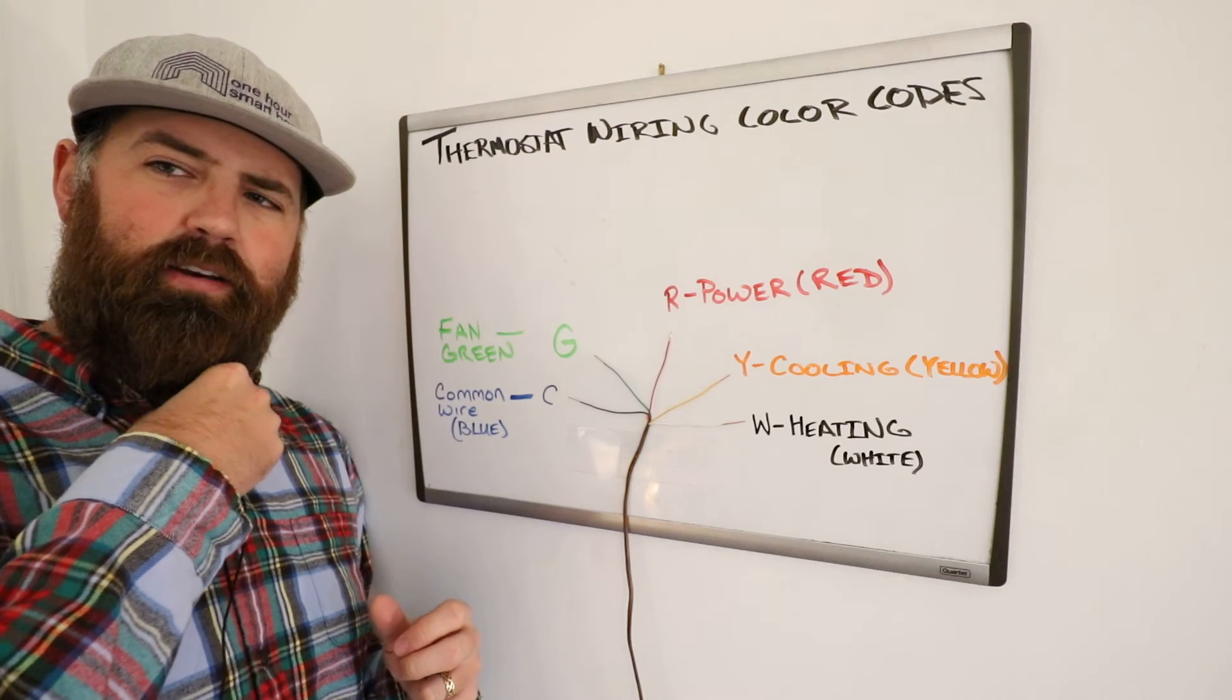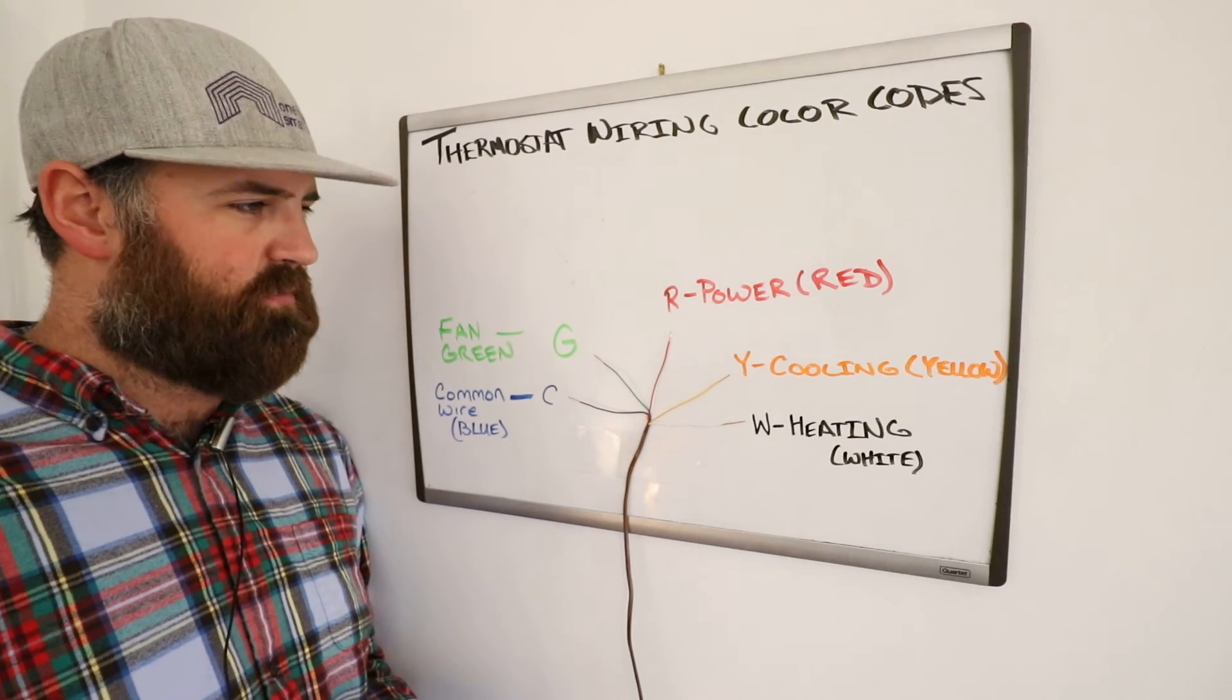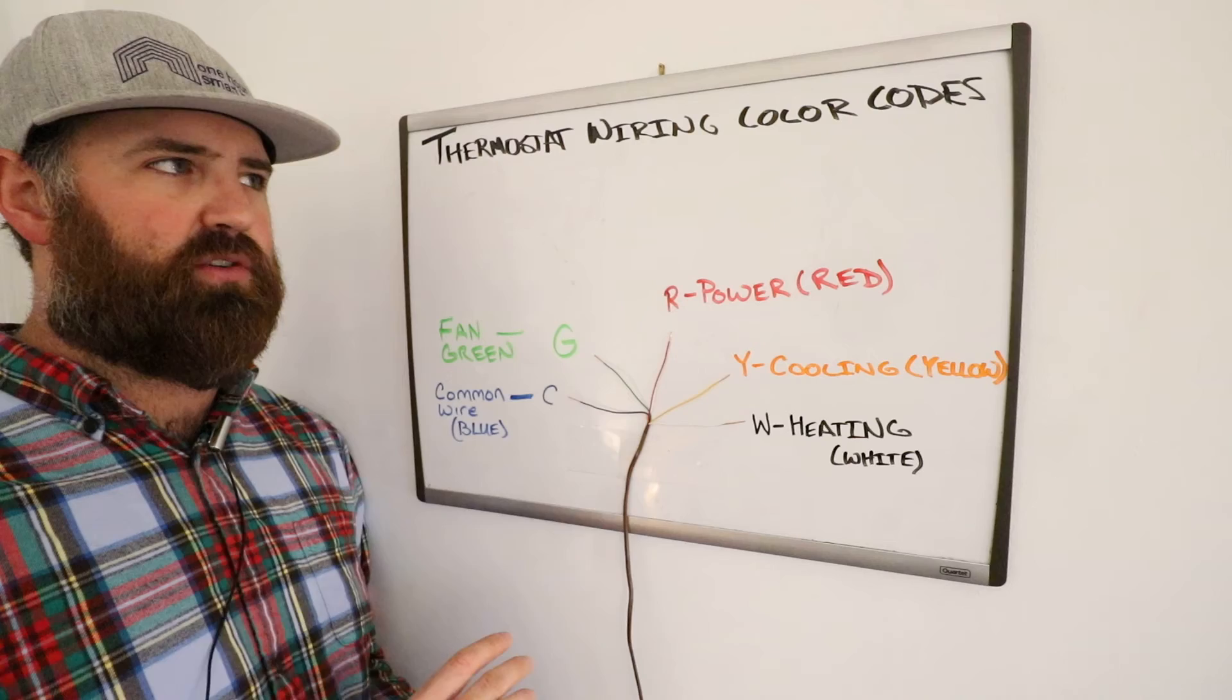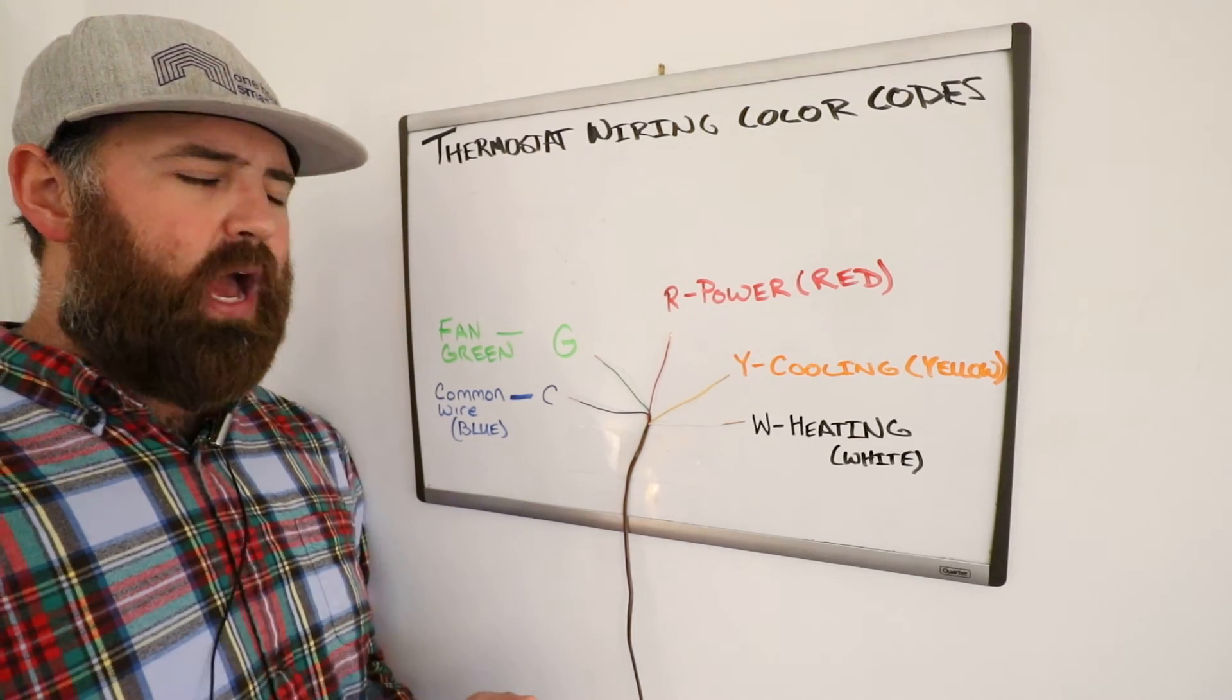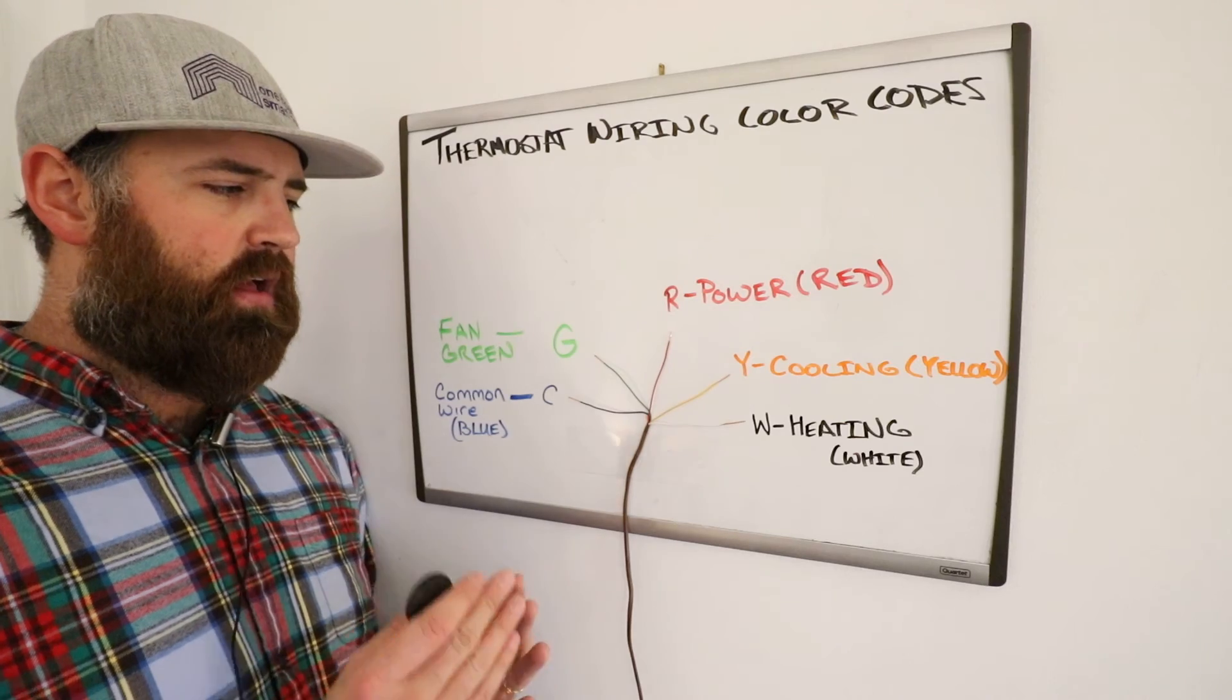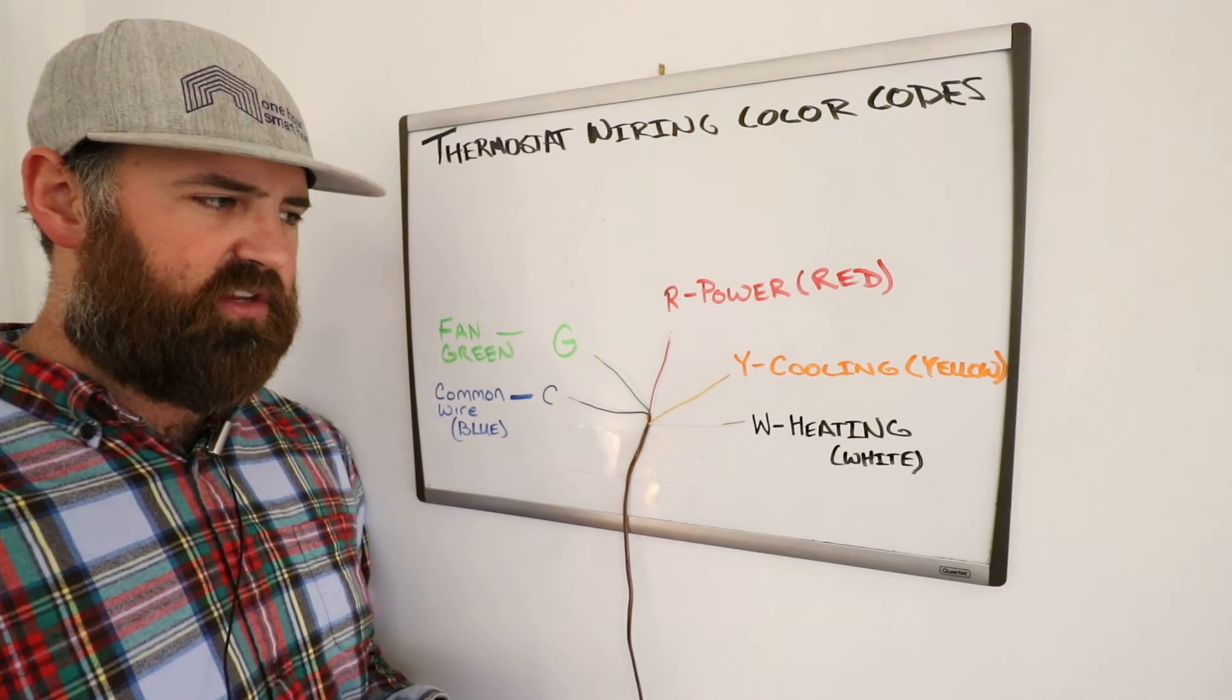And I knocked the mic off, so I hope that didn't sound too crazy. I flew across the room probably. But, that is the difference between the five wires and what they do for a thermostat and the color codes for your thermostat. So, if you had a smart thermostat or an existing thermostat and you took it off the wall and you forgot what those wires meant, this provides a good diagram showing you exactly what they mean and what they do.